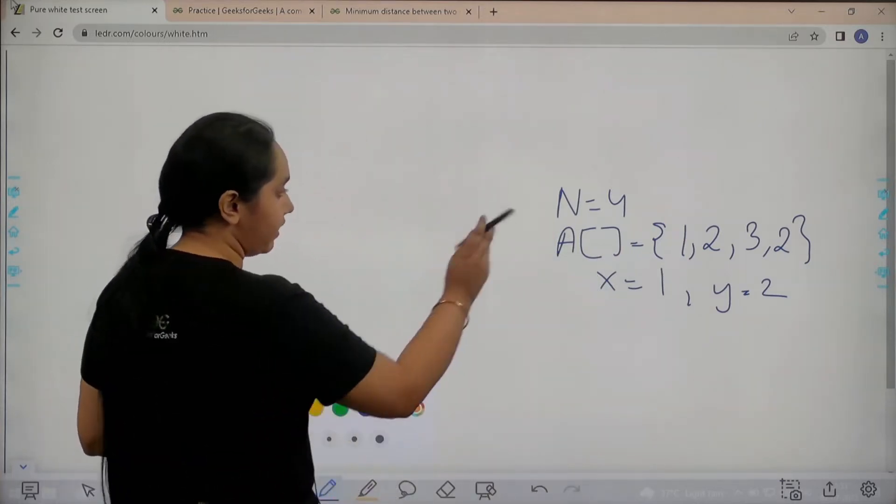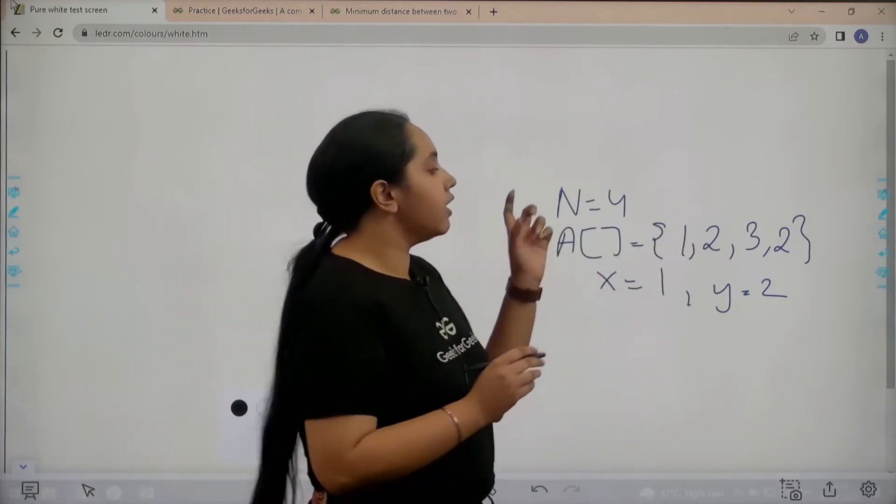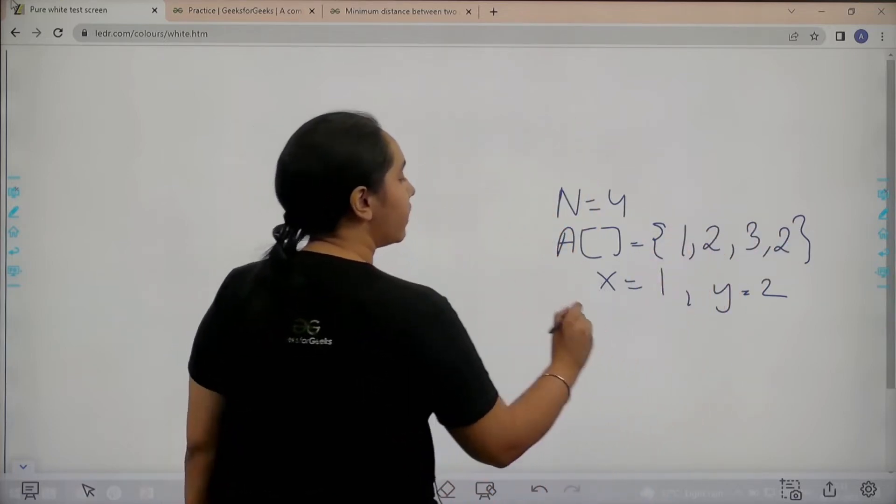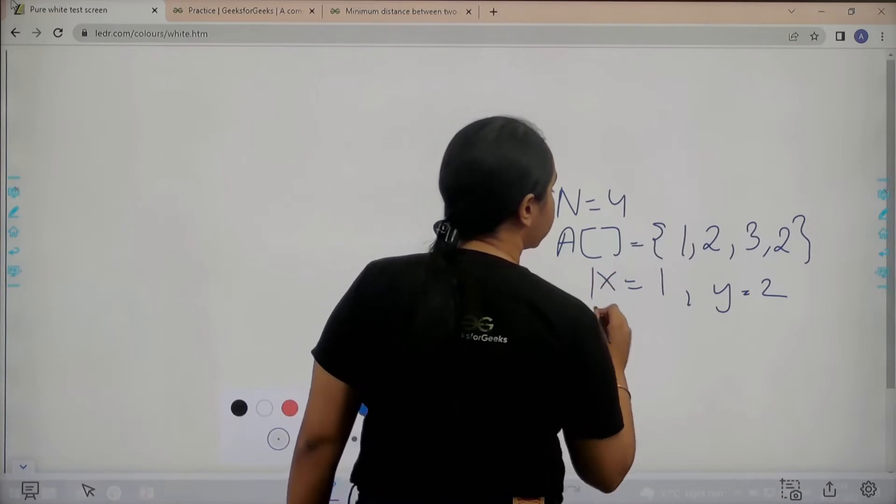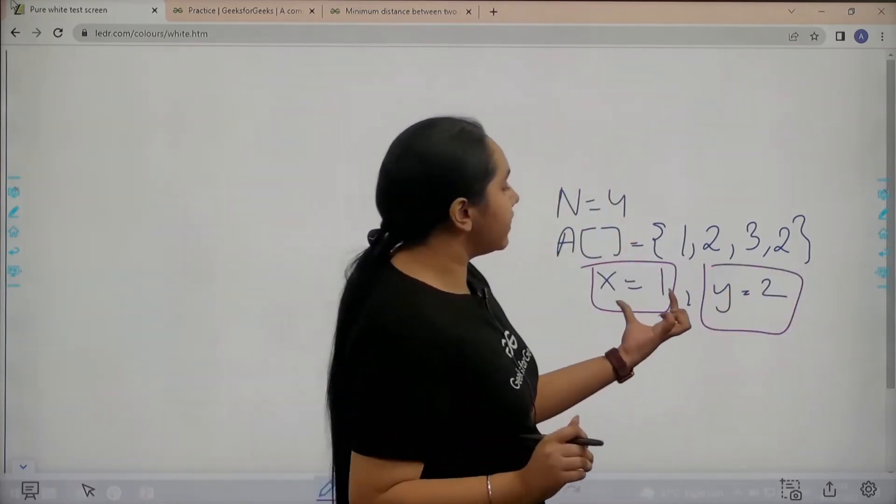In this question we are given an array, for example N equals 4, that means the size of the array is 4. The array has four elements: 1, 2, 3, and 2. We are given x value as 1, y value as 2, and we need to find the minimum distance between these two values.